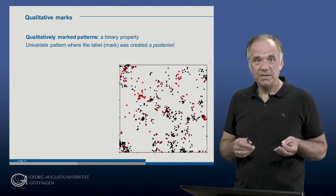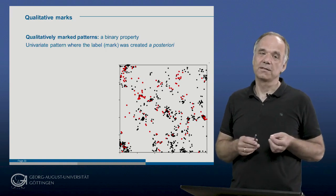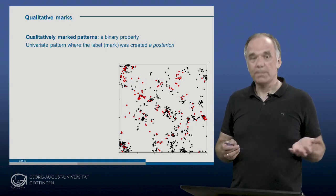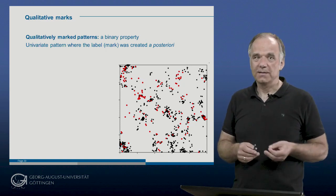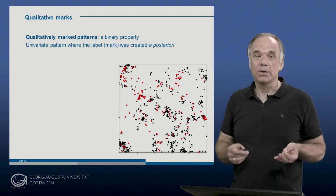In the first step, a process creates the univariate pattern, for example shrubs in a shrubland. A second process creates the binary mark, for example surviving a fire or being burned.